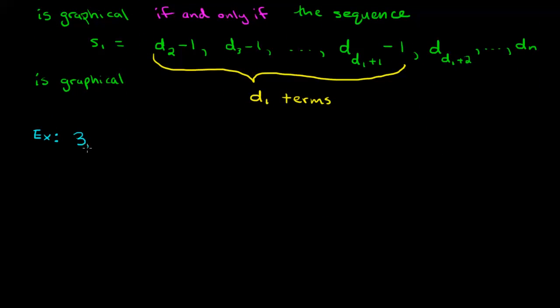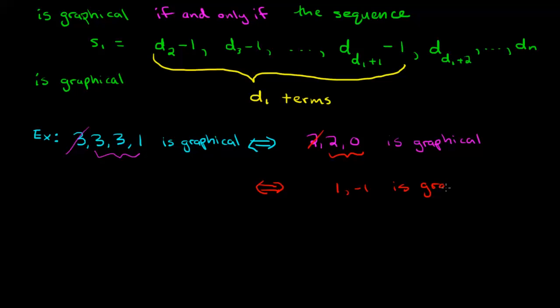Let's first take as an example 3, 3, 3, 1. We already know it's not going to be graphical because we've seen it before but this sequence is graphical if and only if the following sequence is graphical. Well what do we do? We remove the first term d1 and then we look at the next d1 terms and we subtract one from each of them. So what that will look like is 2, 2, 0. So it's graphical if and only if 2, 2, 0 is graphical. Now this sequence is graphical if and only if when we apply the same process we get a graphical sequence. So we remove the first thing 2 and we subtract 1 from the next two places. We're going to get 1 and minus 1. So the whole sequence is graphical if and only if 1, minus 1 is graphical but clearly 1, minus 1 is not graphical because minus 1 cannot be the degree of any vertex.